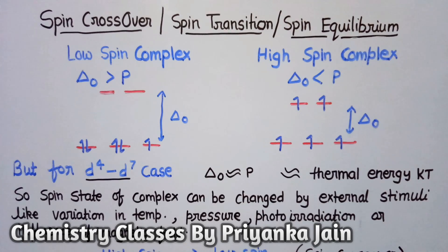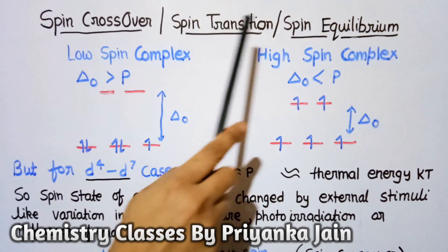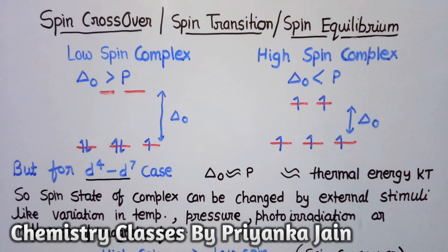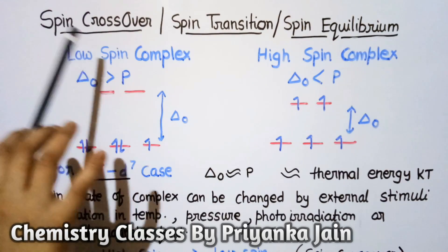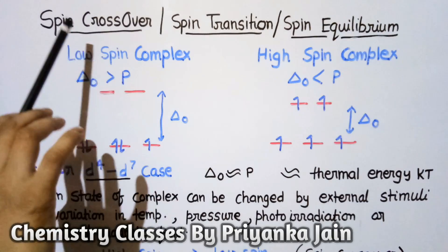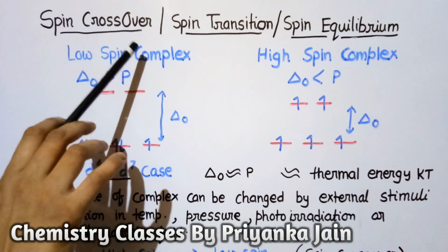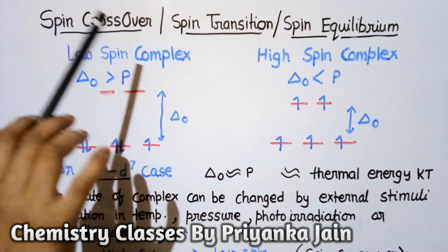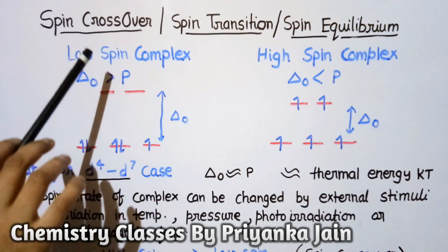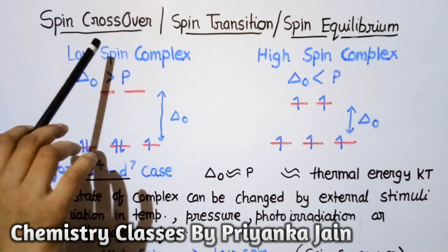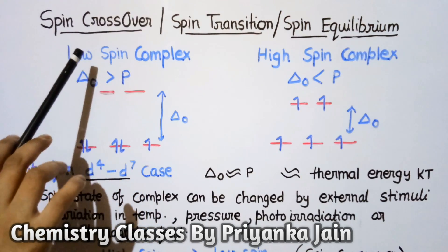Today we are discussing spin crossover in transition metal complexes, also known as spin transition or spin equilibrium. As the name suggests, there is a transition of spin — the spin state of the complex is changed from low spin to high spin or vice versa. Such a transition is driven by external stimuli like temperature, pressure, etc., and is known as spin crossover.